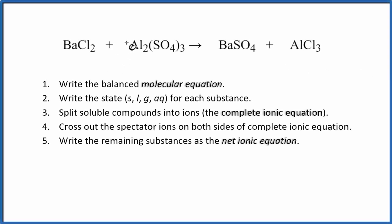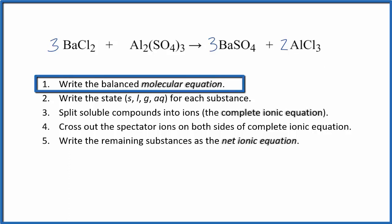In this video we'll write the balanced molecular equation for barium chloride plus aluminum sulfate. We balance the equation with coefficients of three, one, three, two. There's a video in the description that explains how I got those coefficients. We have a balanced molecular equation which is the first step in writing a net ionic equation.